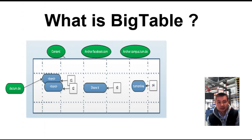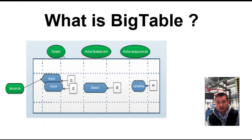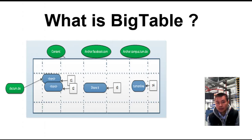Bigtable is a structured distributed storage system built on GFS. It stores massive sets of data from Google Reader, MySearchHistory, Google Earth, YouTube, Gmail, Google Analytics, and web crawlers. Basically it can be perceived as a distributed, persistent, multi-dimensional sorted array in which data is accessed by a row key, column key, and a timestamp, where every column can store any name-value pairs of the form column family, label, and string.